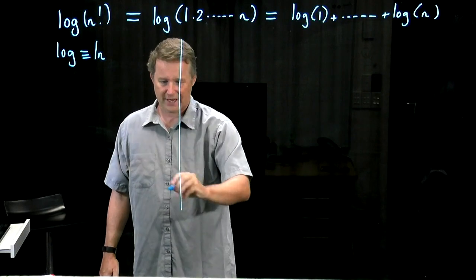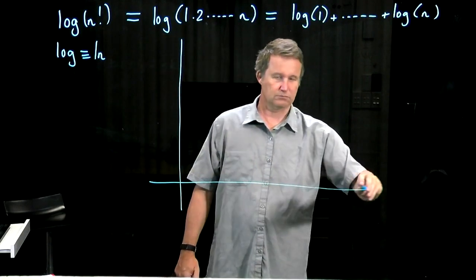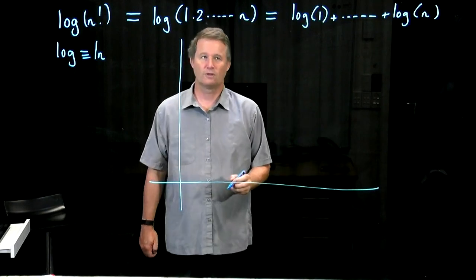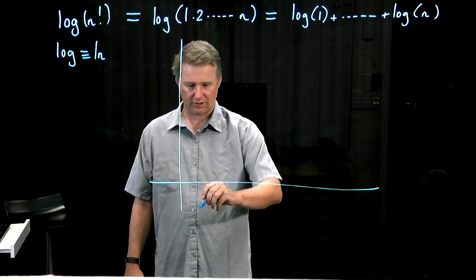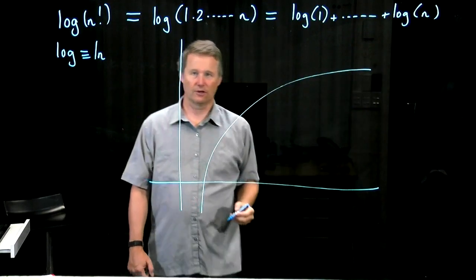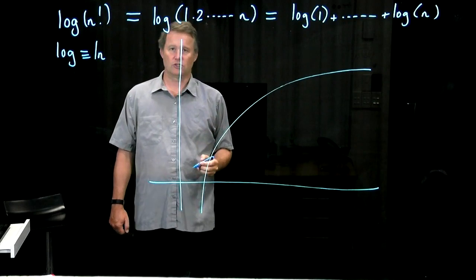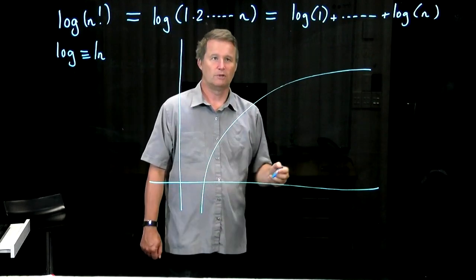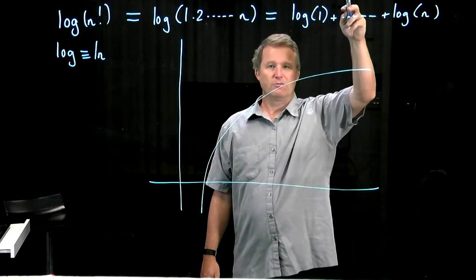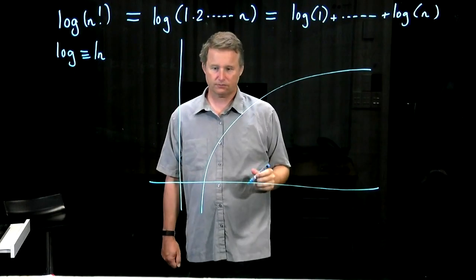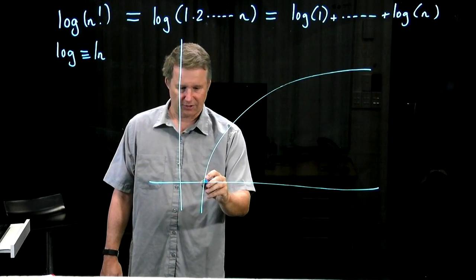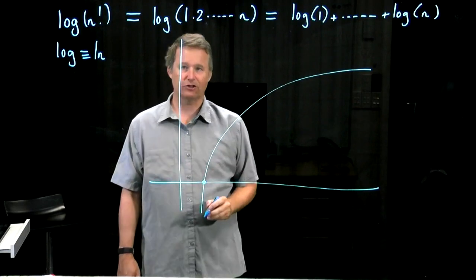We're going to have a look at a standard trick which goes back several hundred years. Works really well. Whenever you have a function that's either increasing or decreasing, you can do this. So you can also use this trick for the sum 1 plus a half plus a third plus dot dot dot plus 1 over n. In that case you have a decreasing function. Here we have an increasing function.